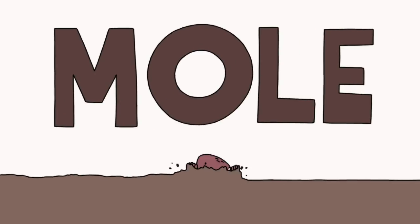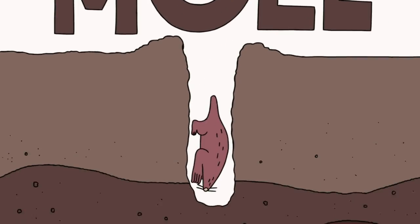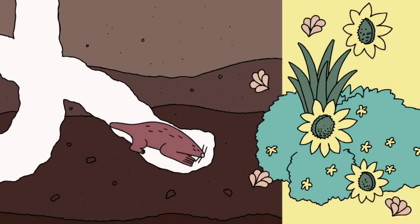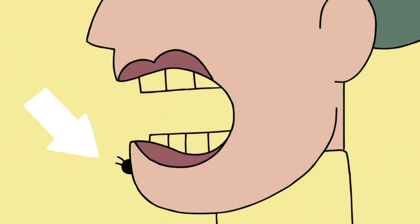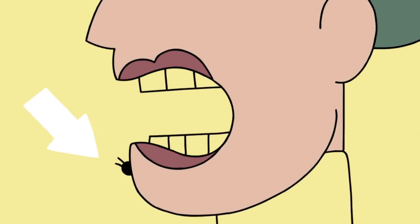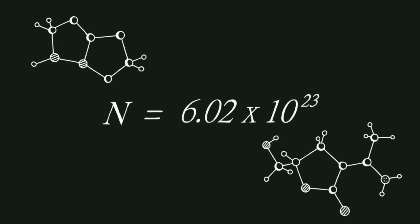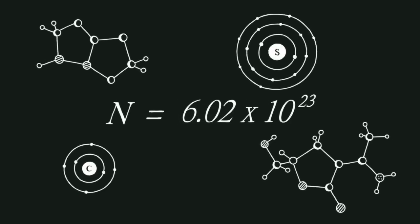Today we're going to talk about the mole. Now I know what you're thinking — I know what a mole is. It's a small, furry creature that digs holes in the ground and destroys gardens. And some of you might be thinking it's a growth on your aunt's face with hair sticking out of it. Well, in this case, a mole is a concept that we use in chemistry to count molecules, atoms, and just about anything extremely small.